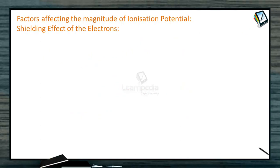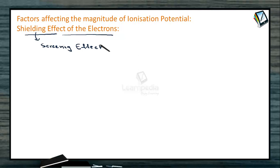Another factor which influences the ionization potential is the screening effect, also known as the shielding effect. When we move from the 2nd period to the 3rd and 4th periods, those elements are heavier, with a very high number of shells and electrons. In such a many-electron system, the valency electrons are shielded by the inner electrons — the inner electrons present in the element shield the nuclear attraction on the valency electrons. This is known as the shielding or screening effect.